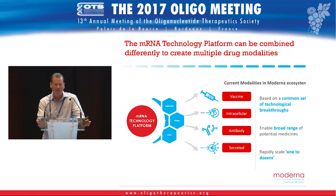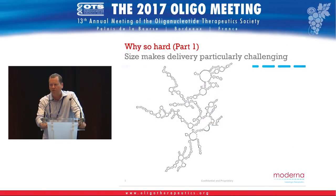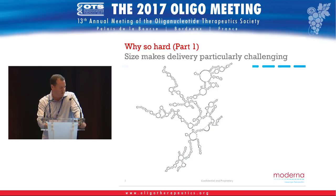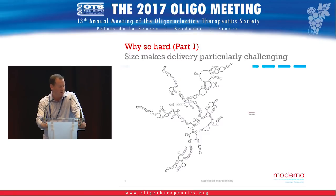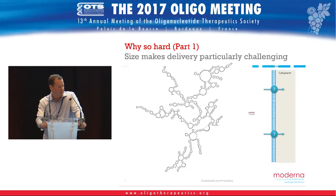There are obviously significant technical challenges to enabling messenger RNA therapeutics. Size is one of those. I've drawn to scale here an siRNA versus a messenger RNA, and it's pretty obvious — the size of a typical messenger RNA is quite a beast, and you're trying to get that across the cellular membrane. So delivery represents one of the significant hurdles to realizing the potential of messenger RNA therapeutics.